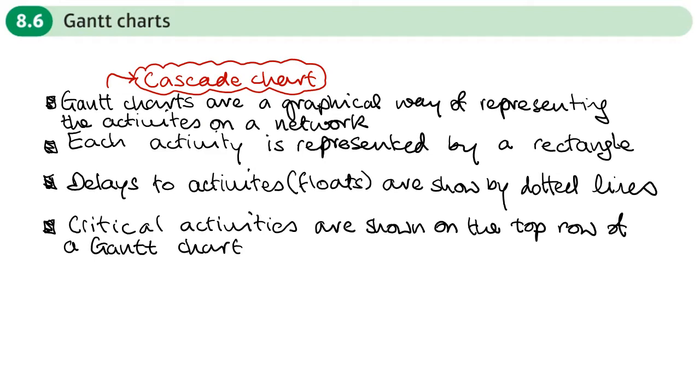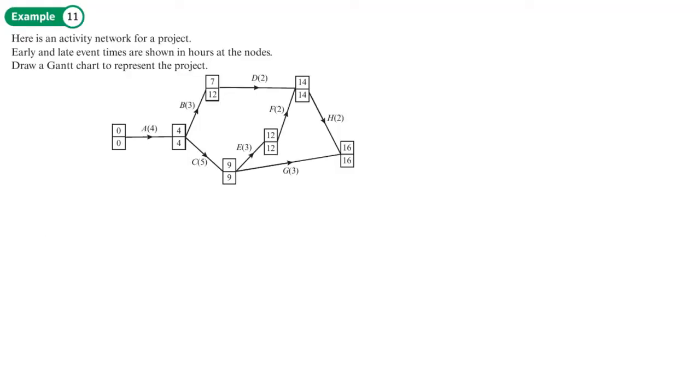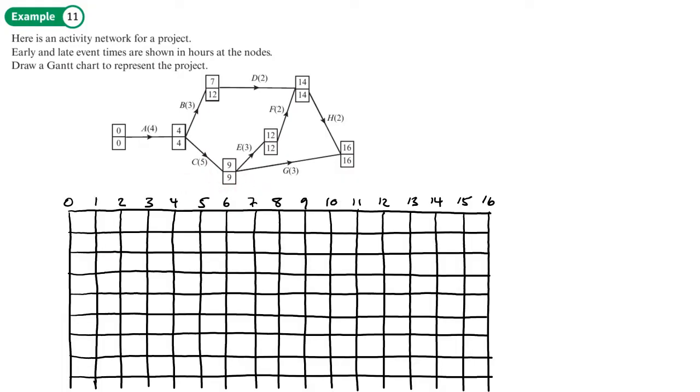Where we have critical activities, they are shown on the top row of a Gantt chart. Example 11: Here is an activity network for a project. Early and late event times are shown in hours at the nodes. Draw a Gantt chart to represent this project. Now normally in the exam, a template will be drawn, but for the purposes of this question, I'm going to draw my own template. So here's my grid.